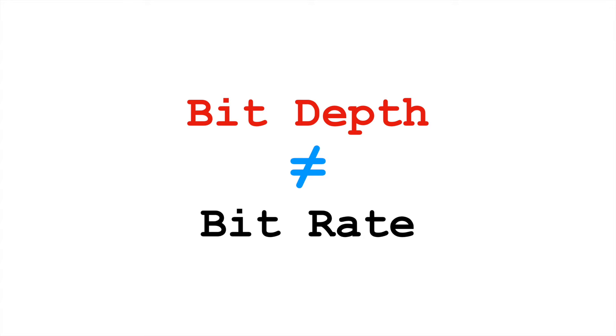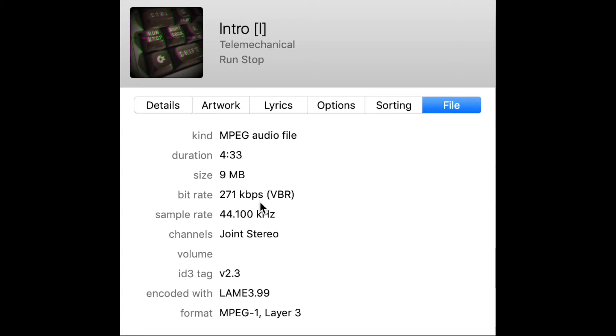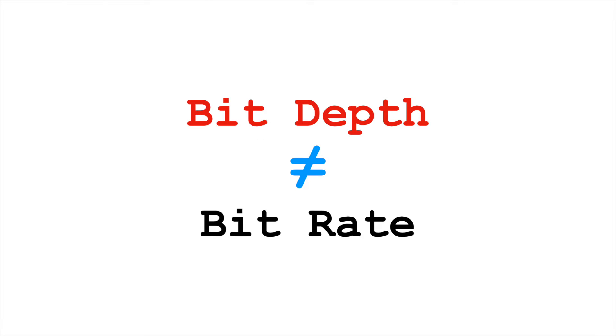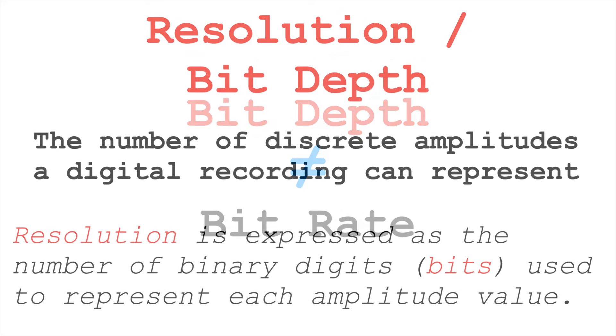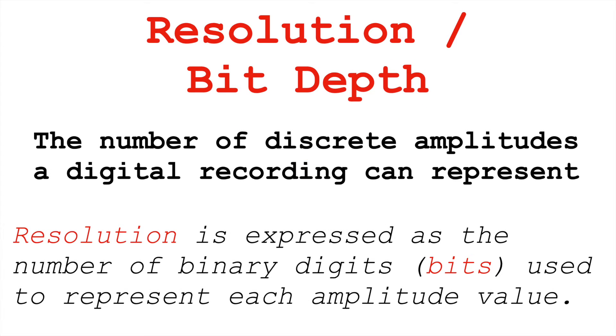A quick and important disclaimer: bit depth and bit rate are not the same thing. I'm going to talk a little bit later about bit rate, but for now, keep in mind these are distinct but related properties, and we should be careful about our terminology. So again, resolution, or bit depth, is the number of discrete amplitudes a digital recording can represent, and resolution is expressed as the number of binary digits, the number of bits, to represent each value.